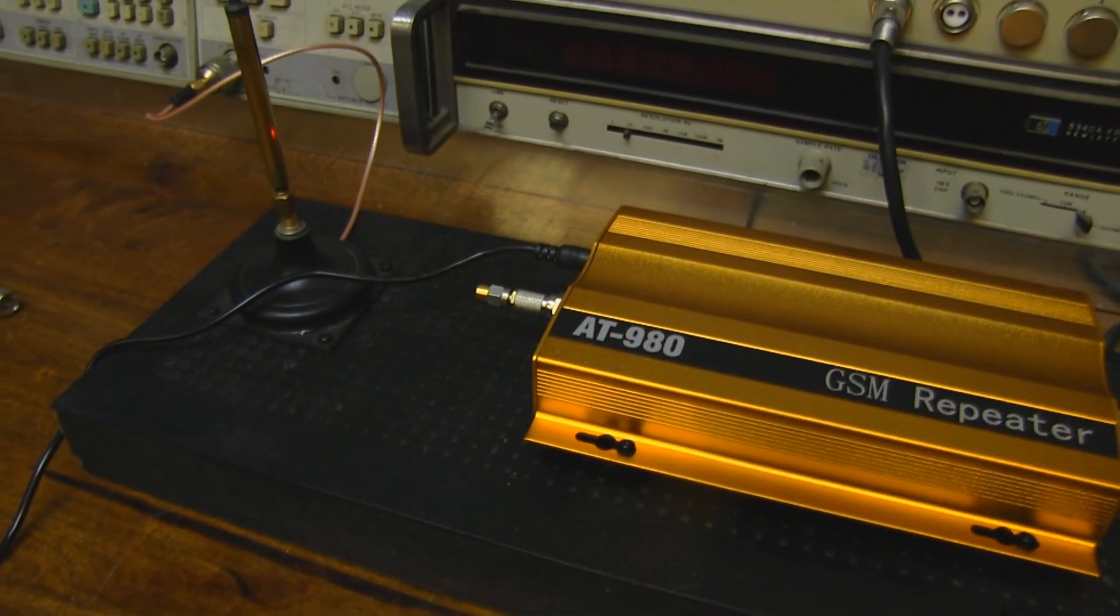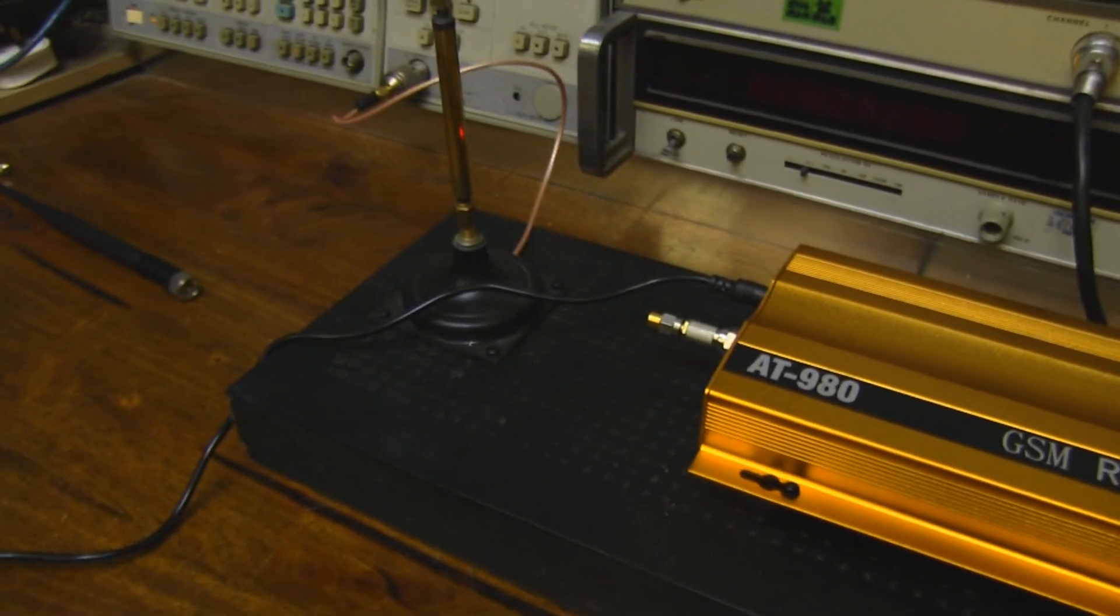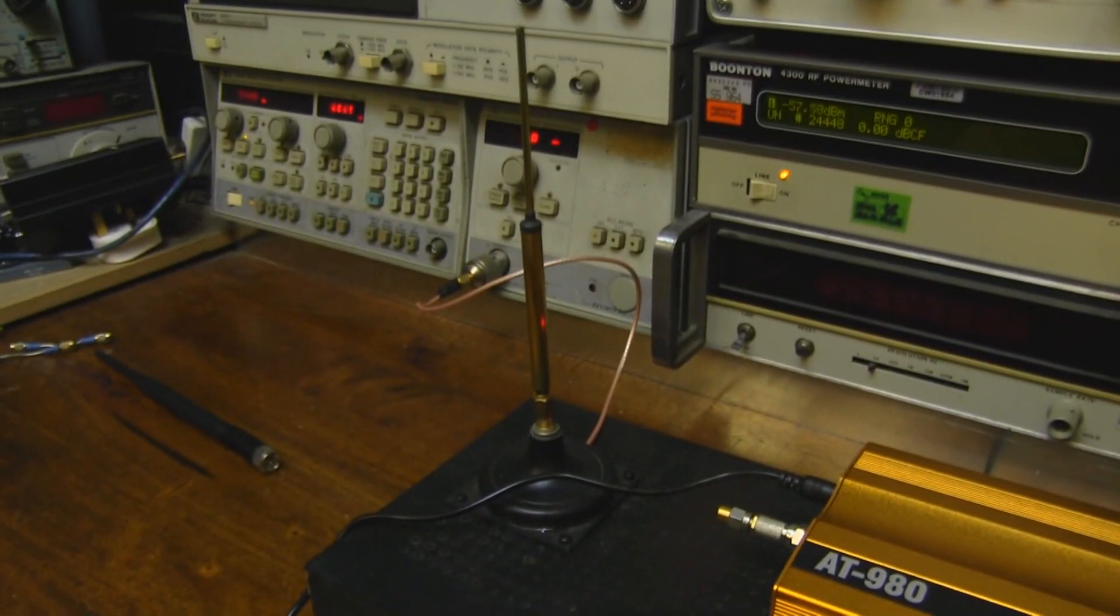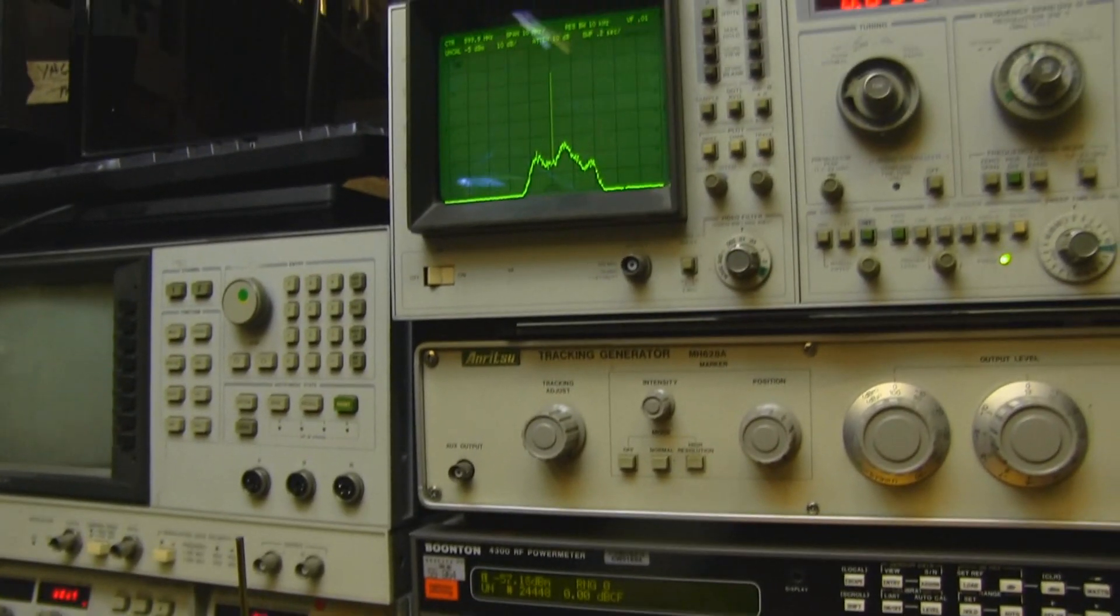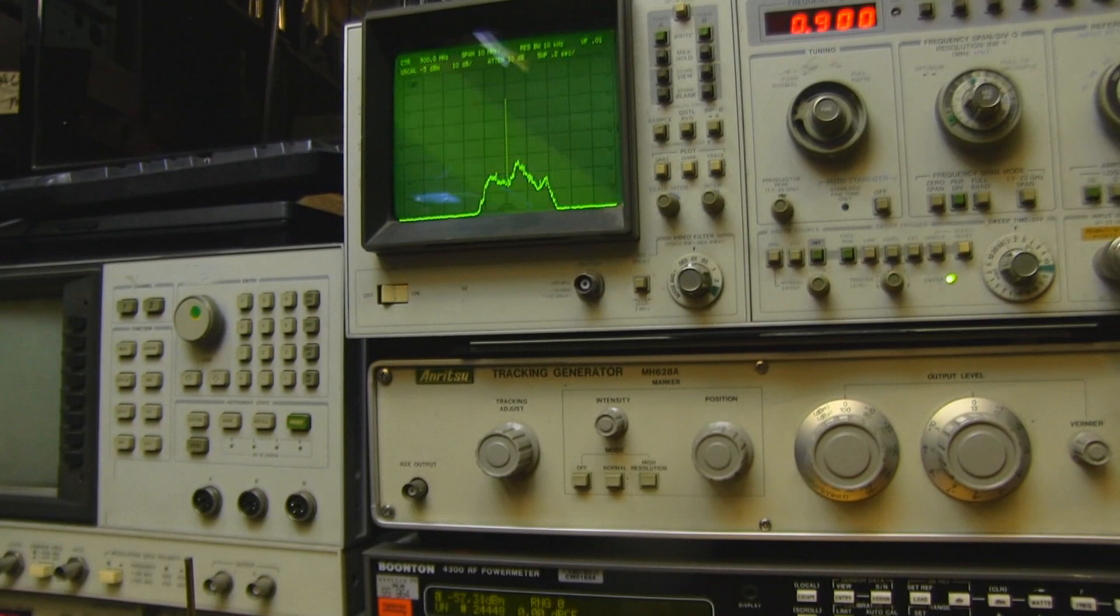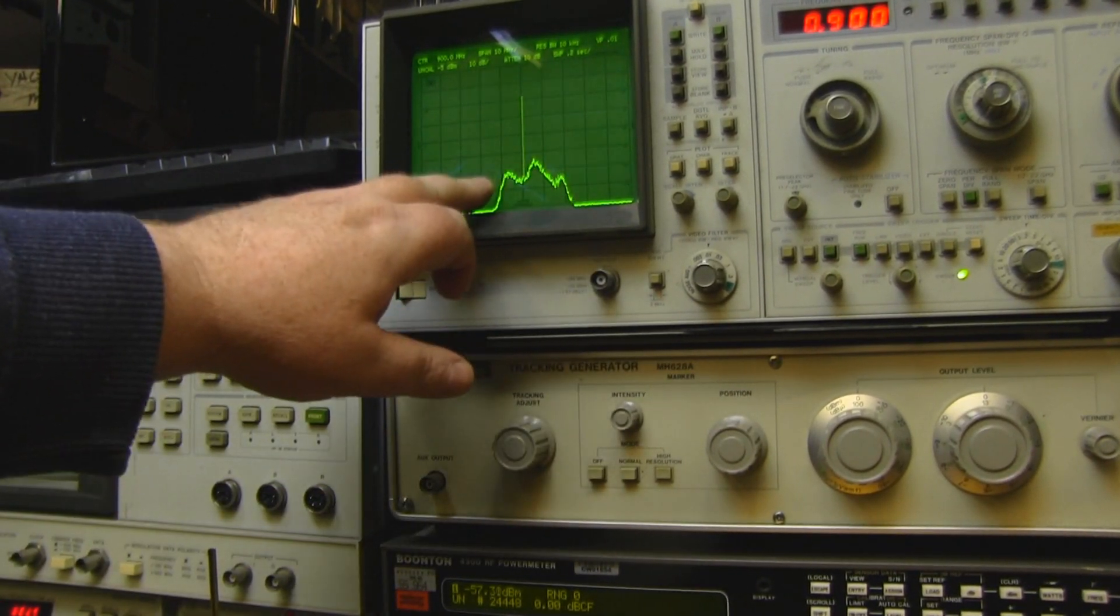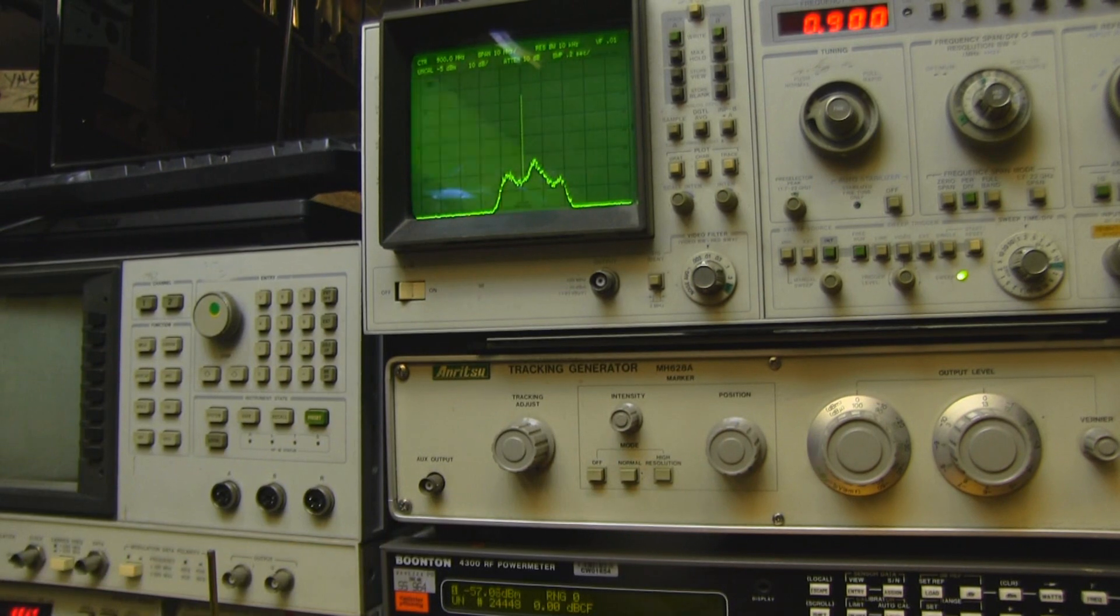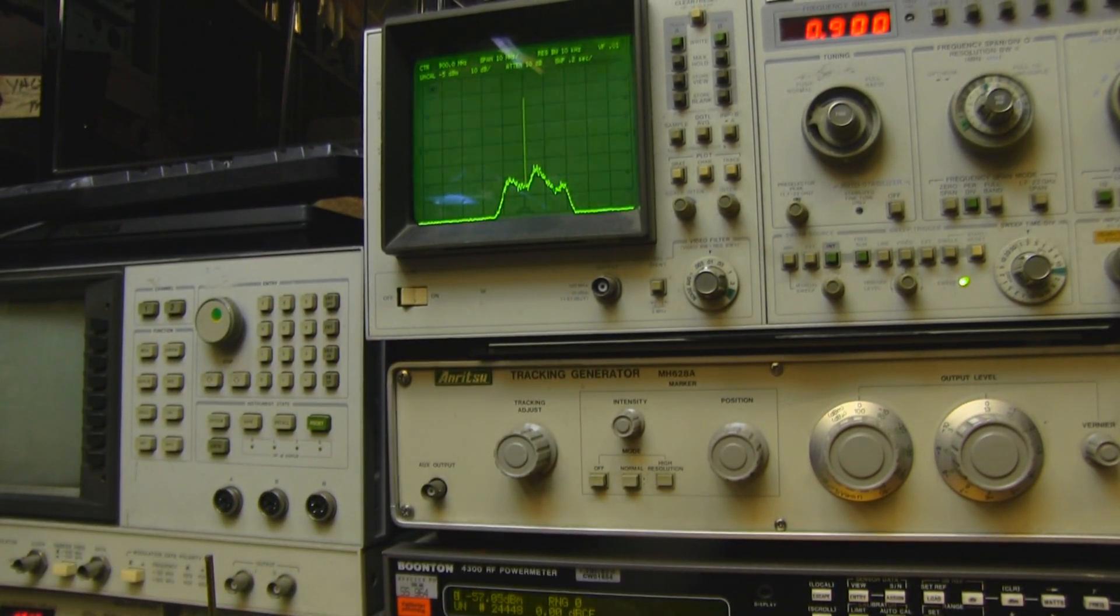So now we've got the 50 ohm termination in place so it's not receiving any signal from here. I've also turned the power level down to 0 dBm but it's not picking anything up at all with that 50 ohm termination on there. And if we take a look at the spectrum analyzer we're getting all this noise and that's just being generated by this little amplifier. It really is pathetic.